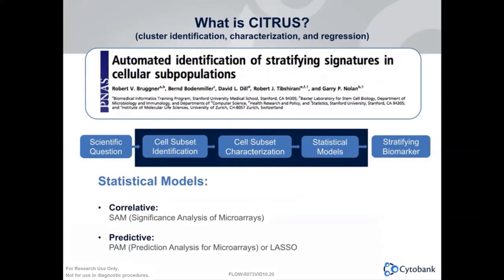Finally, back to Citrus. What is Citrus? Citrus stands for Cluster Identification, Characterization, and Regression. It has several components: first, unsupervised hierarchical clustering to identify phenotypically similar cells across all samples; then characterization of those clusters by either abundance of subsets or median expression of markers like activation markers or phosphoprotein markers; and then statistical models are used to identify stratifying biomarkers that can differentiate between groups.